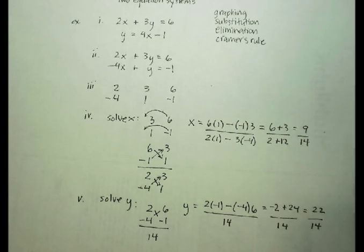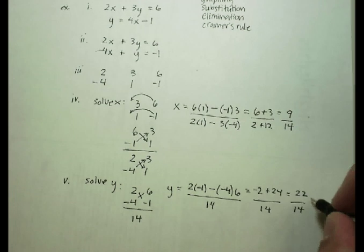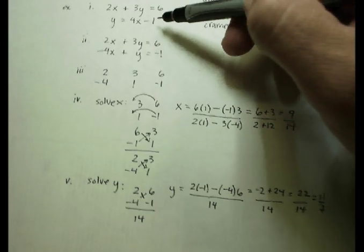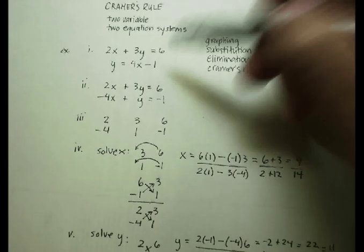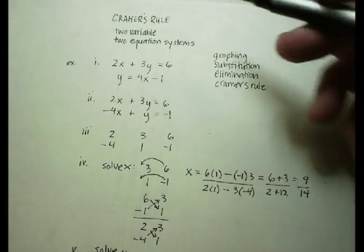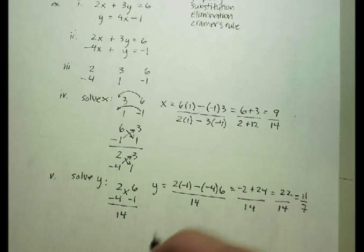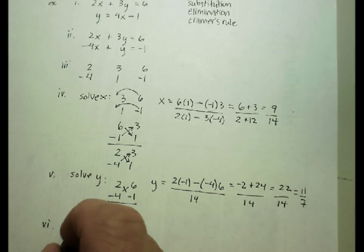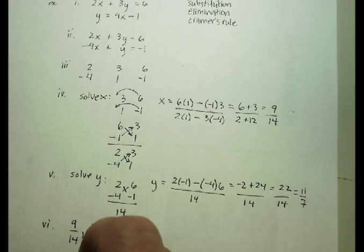And there's your answer. I actually can reduce that, can I? So I think I will. 11 over 7. So the answer to this matrix is, excuse me, the answer to this system, these two lines will cross at, we'll call this step 6, 9 14ths, 11 7ths.